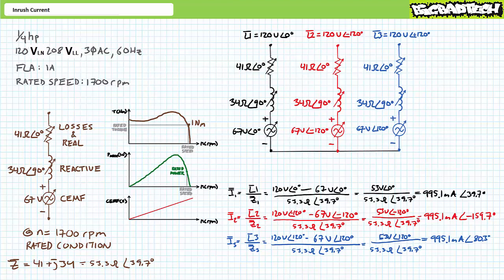In summary, the current drawn by a motor reflects not only the magnitude of the real and reactive components at that specific operating condition on the speed-torque curve, but also the amount of counter-electromotive force experienced at that rotational speed. At higher rotational speeds, the winding experiences more CEMF in opposition to applied voltage; at lower rotational speeds, less. At zero RPM, the winding experiences no CEMF in opposition to applied voltage, and it is this phenomenon above all others that explains the intense but brief surge of current known as inrush.